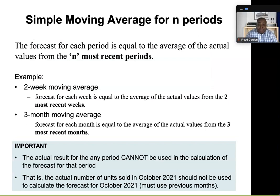Let's jump now into what we call the simple moving average forecast. The simple moving average forecast looks at the average of the most recent months. We can be doing a two-week moving average, looking at the average for the previous two weeks, or a three-month moving average looking at the average number of units sold for the last three months. An important note is that we cannot use the actual value from a month to forecast that same month. For example, if we're forecasting October 2021, we could not use the actual sales from October as part of that forecast. We must use previous months — we look at the past to forecast the future.